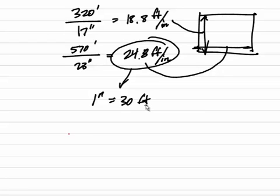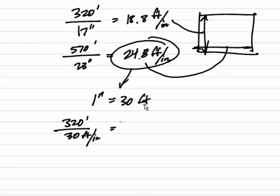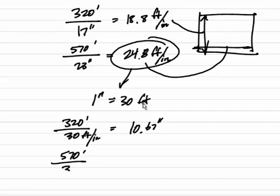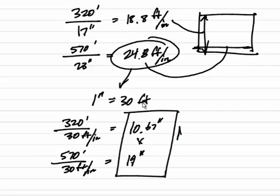If I apply this scale, I can say 320 feet divided by 30 feet per inch gives me 10.67 inches, and that will fit vertically in my drawing space. Then 570 feet divided by 30 feet per inch is going to give me 19 inches. So that is the size of my mapped area, and that is less than the size of my available drawing — confirming that 1 inch equals 30 feet is the best scale.